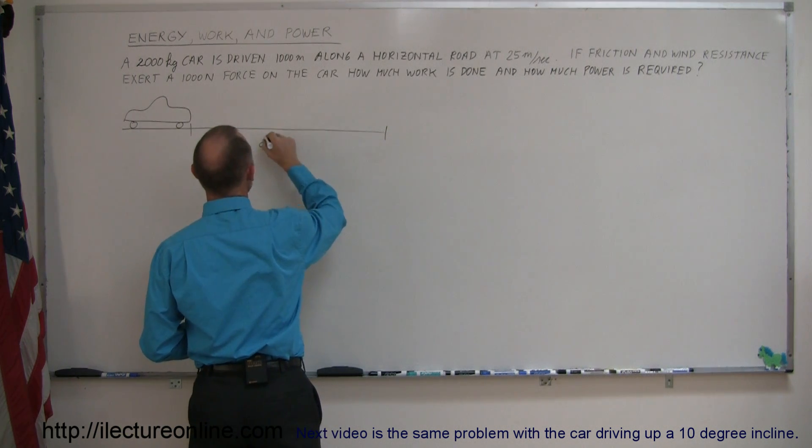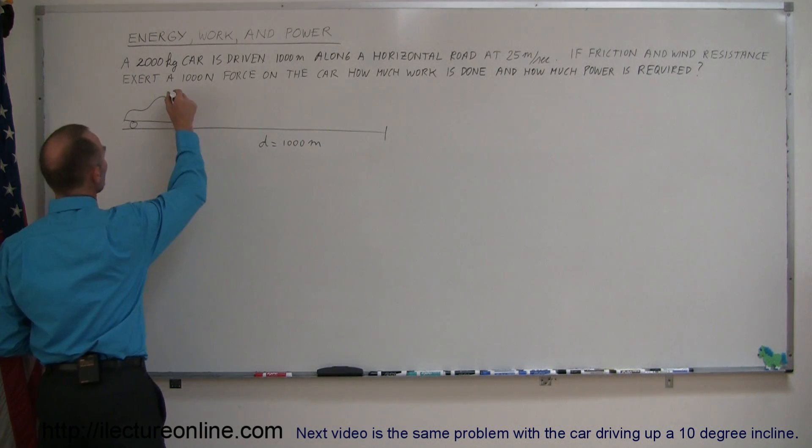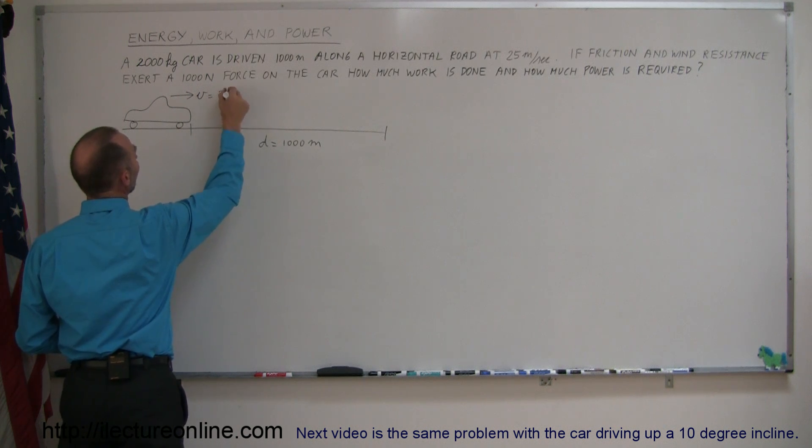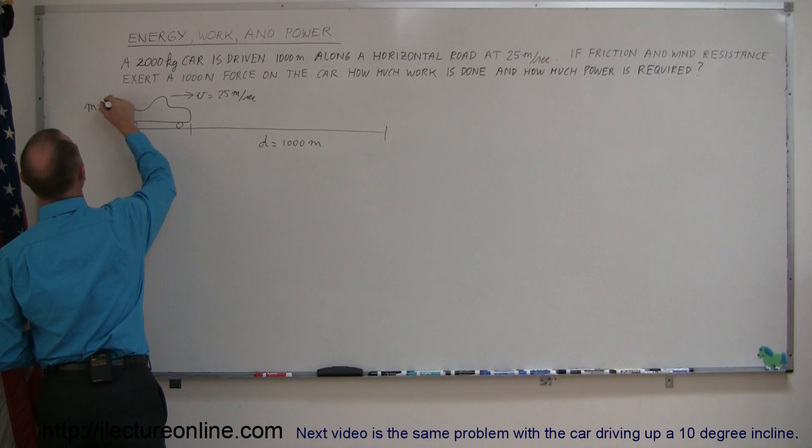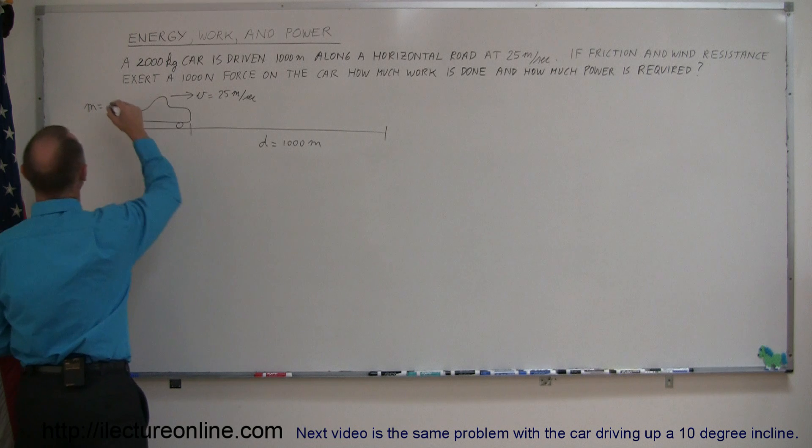So the distance d equals 1,000 meters. While the car is moving at a velocity v equals 25 meters per second, and the mass of the car is equal to, what was it, 2,000 kilograms. I was going to write 1,000, but it's 2,000 kilograms.